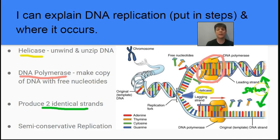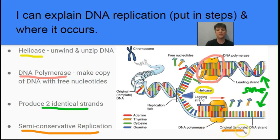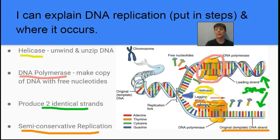This is because of those complementary base pairing rules — adenine always pairs with thymine, and guanine always pairs with cytosine. Finally, it's important to remember that this process is semi-conservative. The two new strands that are produced each contain half of the old strand, and then they have half of the strand which is newly synthesized DNA.